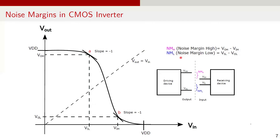These margins define the acceptable voltage ranges for logical high and logical low signals, ensuring reliable CMOS inverter operation under noisy conditions. Consider a circuit with a driving device and a receiving device. It's important to ensure that the output voltage of the driving device for a logic high, VOH, is more than the input voltage of logic high, VIH, of the receiving device. This is important because due to noise, the logic high at the output may arrive with some reduced voltage at the input, but a significant noise margin ensures it is still recognized as a logical high at the receiving device.